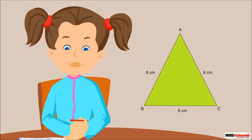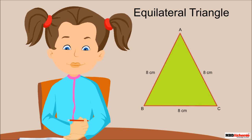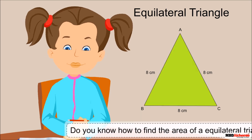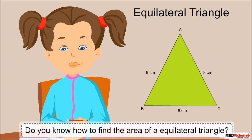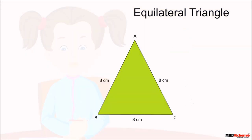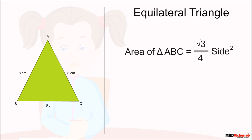Rhea excitedly says her triangle is an equilateral triangle because each side is 8 centimeters. She uses the formula: area of an equilateral triangle is √3/4 multiplied by side squared.